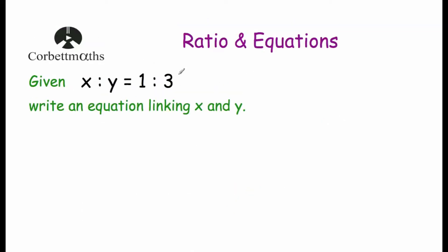Our next question: given that the ratio of x to y is 1 to 3, write an equation linking x and y. We know if we simplify that ratio we get 1 to 3, meaning y is 3 times larger than x. For example, x could be 20 and y could be 60. So y equals 3 times x. Using our shortcut — multiply x by the y number in the ratio (3) and y by the x number (1) — we get y equals 3x.